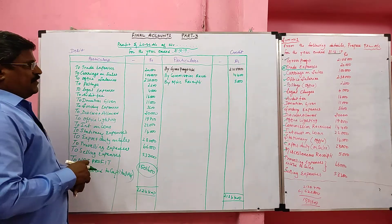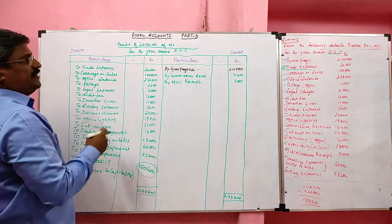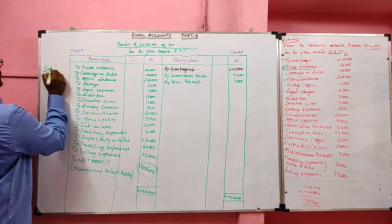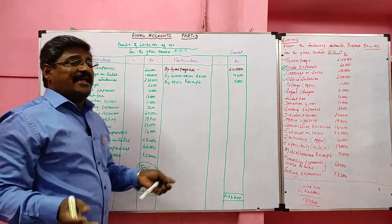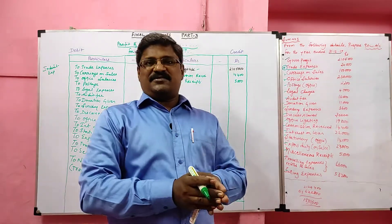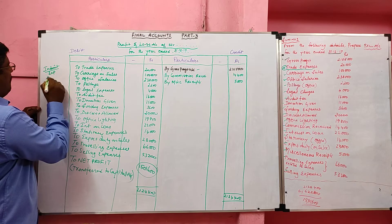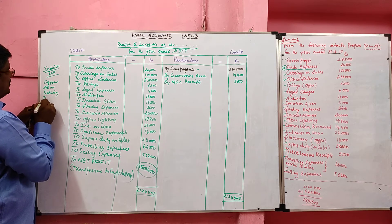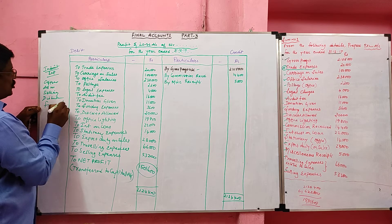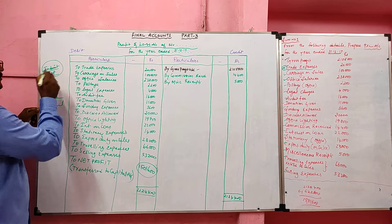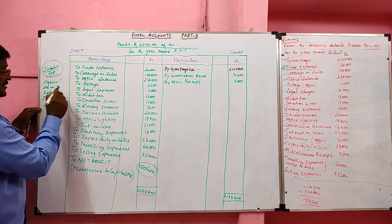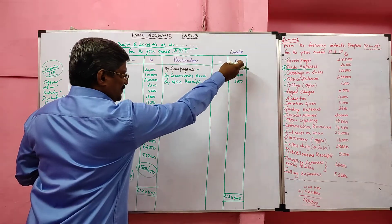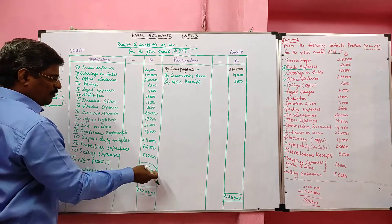In the profit and loss account, the credit side's first item is gross profit. If gross loss is given, it should be debited. The debit side records all indirect expenses — which are office expenses, administration expenses, selling expenses, distribution expenses, and financial expenses. In this problem the credit total is heavier than the debit total. I totaled the credit side first, brought it to the debit side, then deducted all debit expenses, and got a value called net profit.